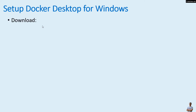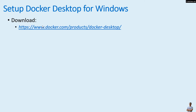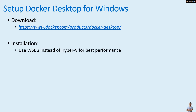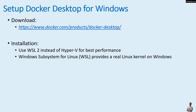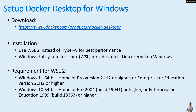To set up Docker Desktop for Windows, you need to download the Docker Desktop installer from its official download page. For installation, you should use WSL version 2 instead of Hyper-V for best performance, because the Windows Subsystem for Linux provides a real Linux kernel on Windows. You also need to pay attention to the version of your Windows operating system — this is a requirement for WSL 2. For example, if you have Windows 10 64-bit, you need to ensure that the build number is 18363 or higher.